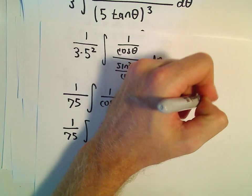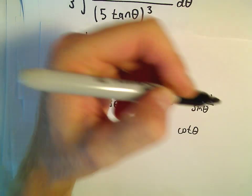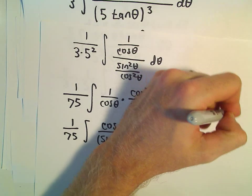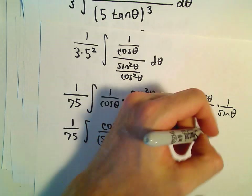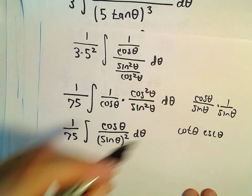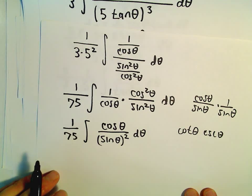If we rewrite this as cosine theta over sine theta times 1 over sine theta, I'm just kind of checking to see what we get. So cosine over sine would be cotangent. 1 over sine is cosecant theta.